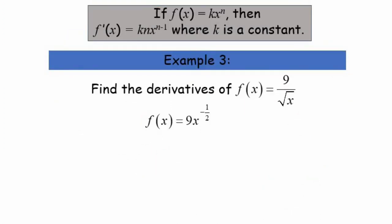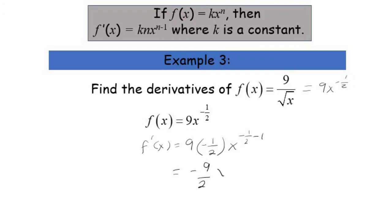Find the derivative of 9/√x. We write 9/√x as 9x^(−1/2), then bring negative one-half in front. So f'(x) equals 9 times (−1/2) times x^(−1/2 − 1), which gives −9/2 times x^(−3/2).